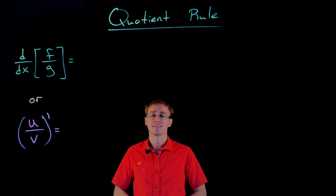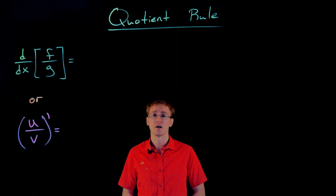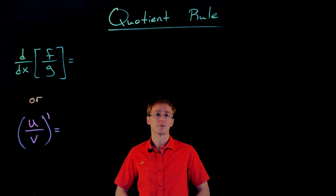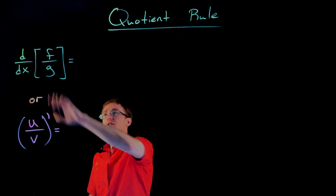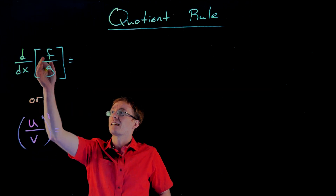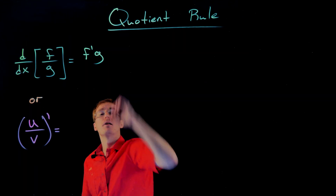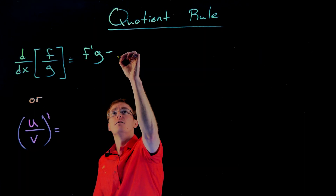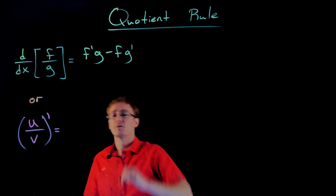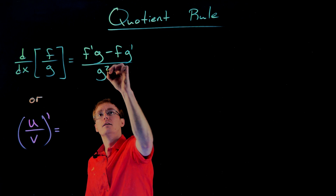It's going to be kind of similar to the product rule in the sense that it's not just going to be the derivative of the numerator function divided by the derivative of the denominator function. But we are still going to be able to find the derivative in terms of those derivatives and the two original functions. Our formula for the quotient rule is: if we want to take the derivative with respect to x of f divided by g, we take the derivative of f, multiply that by the original function g, now we subtract away from that the original function f times the derivative of g, and then we divide the whole thing by g squared.